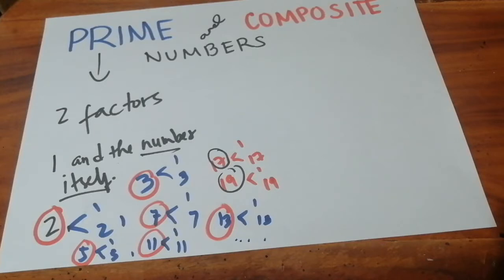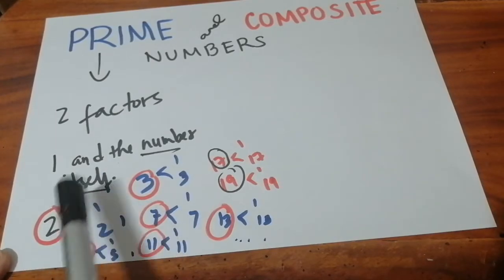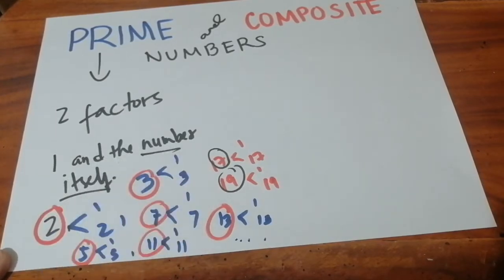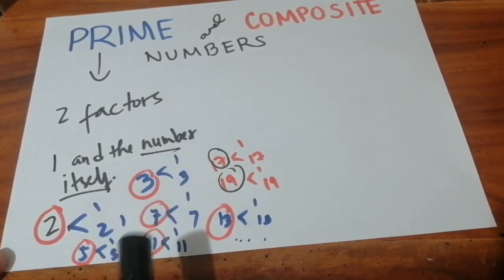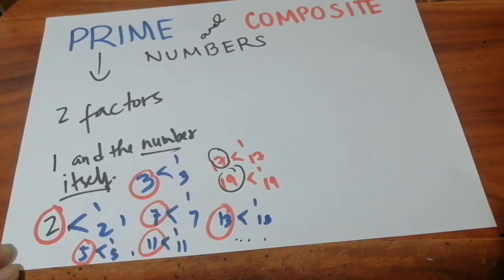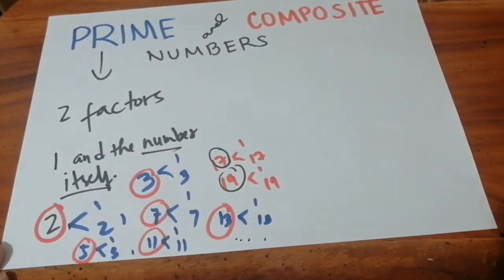That's what we call prime numbers. The only factors of a prime number are one and the number itself — one and two, one and five, one and three, one and seven, and so on and so forth. That is what we call prime numbers.